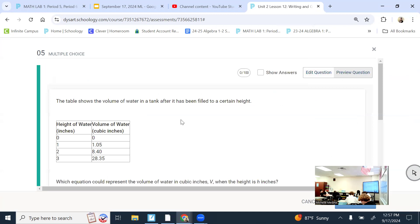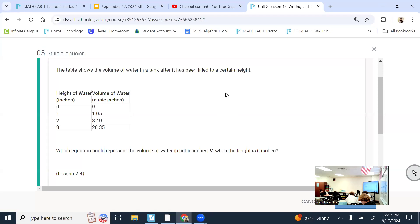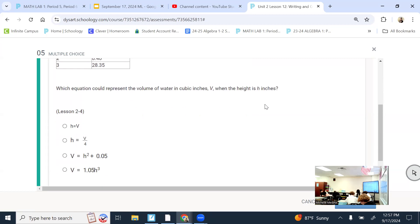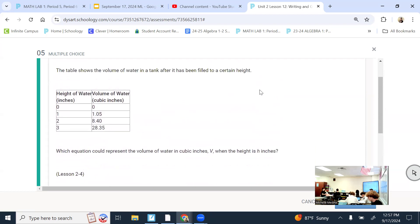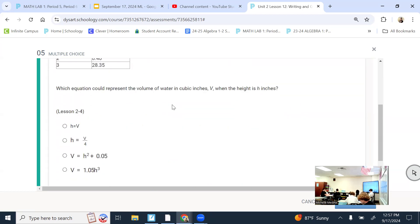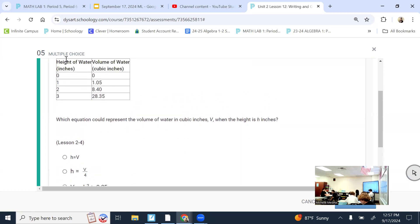The table shows the volume of water in a tank after it's been filled to a certain height. Which equation could represent the volume of water in cubic inches when the height is h inches? So if it works for the equation, then when I plug in the height, I get the volume. So that's how I'm going to go about this. I think that would be easiest.